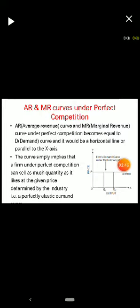Therefore, the demand curve is a horizontal line parallel to the x-axis. This implies that a firm under perfect competition can sell as much quantity as it likes at a given price determined by the industry. This is known as a perfectly elastic demand curve, where average revenue equals marginal revenue at price P.